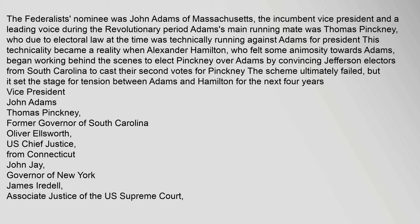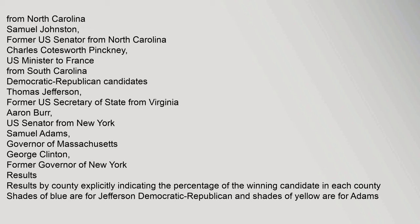Federalist candidates included: Vice President John Adams; Thomas Pinckney, former Governor of South Carolina; Oliver Ellsworth, U.S. Chief Justice from Connecticut; John Jay, Governor of New York; James Iredell, Associate Justice of the U.S. Supreme Court from North Carolina; Samuel Johnston, former U.S. Senator from North Carolina; and Charles Coatsworth Pinckney, U.S. Minister to France from South Carolina. Democratic-Republican candidates were: Thomas Jefferson, former U.S. Secretary of State from Virginia; Aaron Burr, U.S. Senator from New York; Samuel Adams, Governor of Massachusetts; and George Clinton, former Governor of New York.